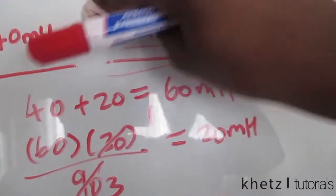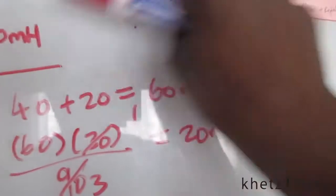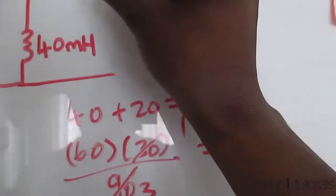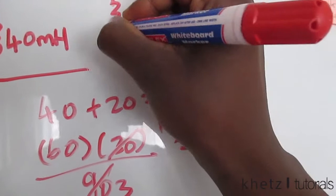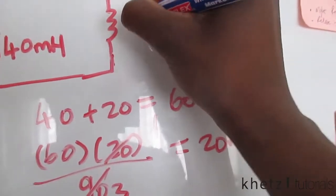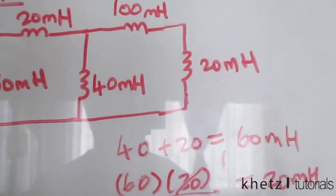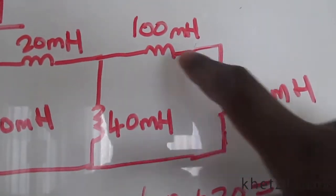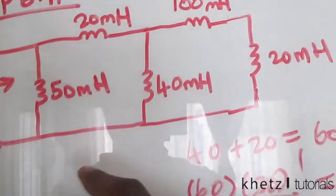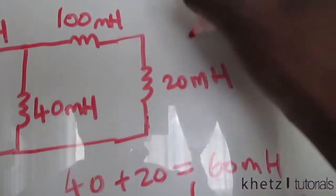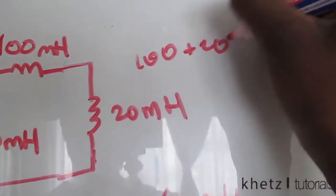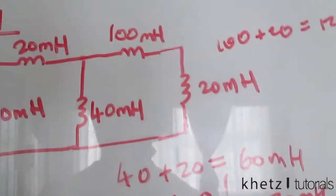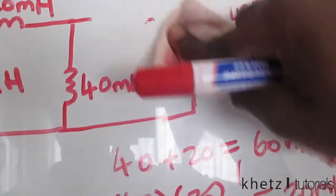Now we erase that part and replace it with its equivalent, which is 20 millihenries. Moving along, we have 20 millihenries in series with 100 millihenries, which means we add 100 plus 20, which is 120 millihenries.